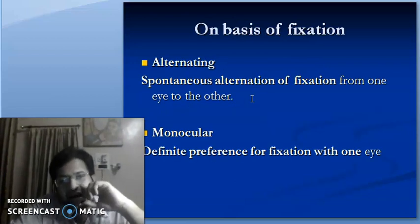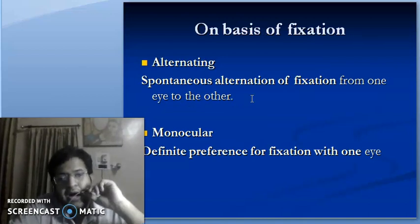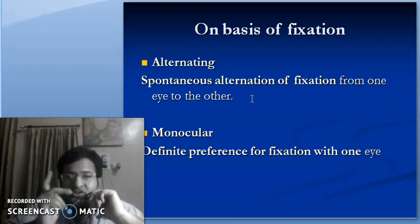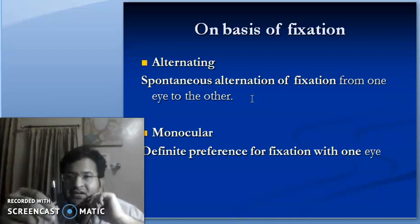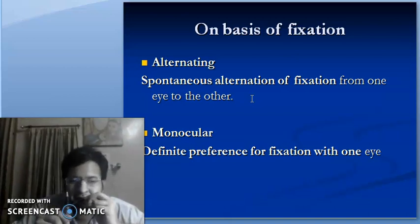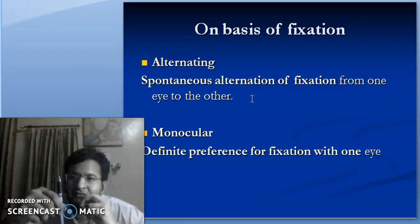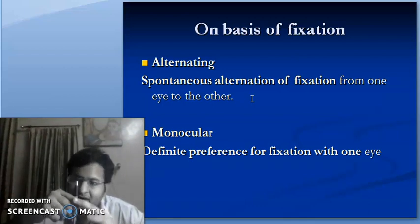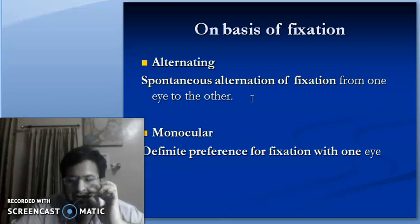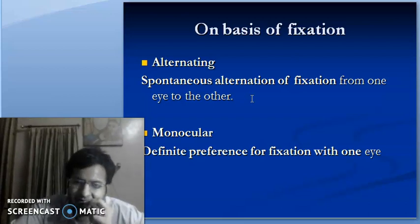On the basis of fixation, strabismus can be classified into alternating and monocular. In alternating strabismus, there is a spontaneous alternation of fixation from one eye to the other — sometimes the right eye fixates and the left is strabismic, and vice versa. In monocular strabismus, there is a definite preference for fixation with one eye, while the other eye is always in the strabismic position.